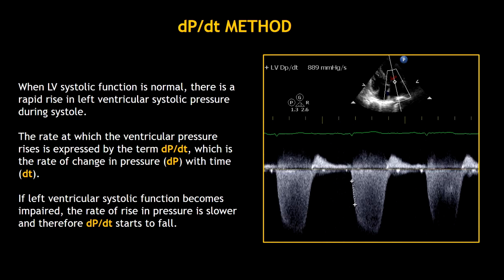If the left ventricular systolic function becomes impaired, the rate of rise in pressure is slower, and therefore DPDT starts to fall.